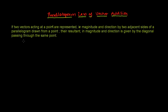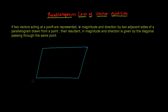Let me make you understand by drawing pictures for each part of what they are actually trying to say. Let's say this is a parallelogram and let me give names to its vertices: A, B, C, D. So definitely this side should be parallel to the opposite side, and this side should also be parallel.